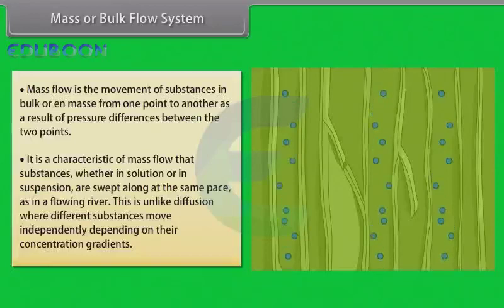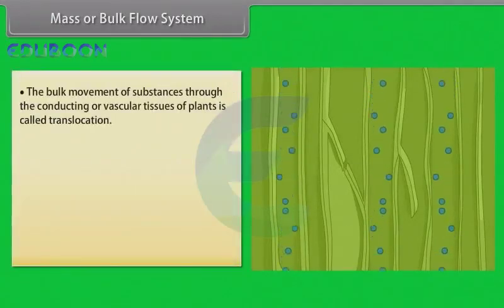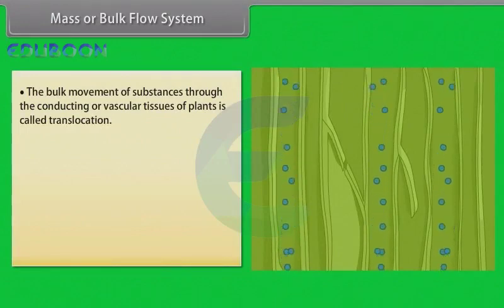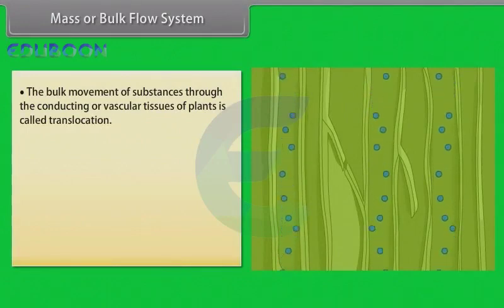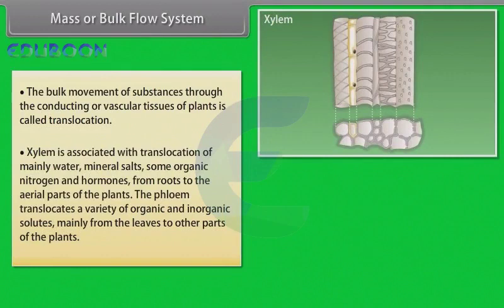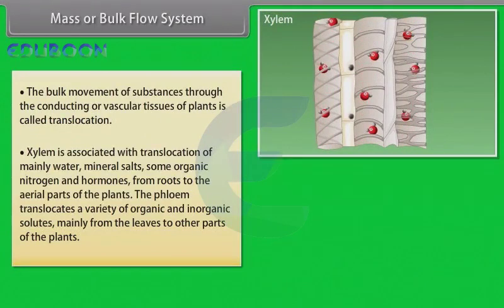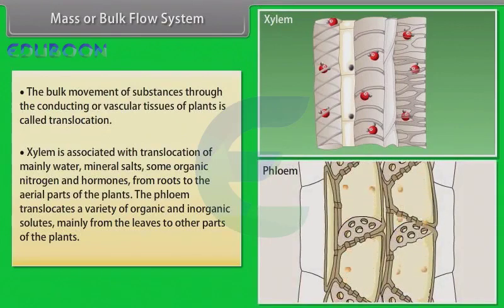Bulk flow can be achieved either through a positive hydrostatic pressure gradient — for example, a garden hose — or a negative hydrostatic pressure gradient — for example, suction through a straw. The bulk movement of substances through the conducting or vascular tissues of plants is called translocation. Higher plants have highly specialized vascular tissues: xylem and phloem. Xylem is associated with translocation of mainly water, mineral salts, some organic nitrogen and hormones from roots to the aerial parts of the plants. The phloem translocates a variety of organic and inorganic solutes, mainly from the leaves to other parts of the plants.